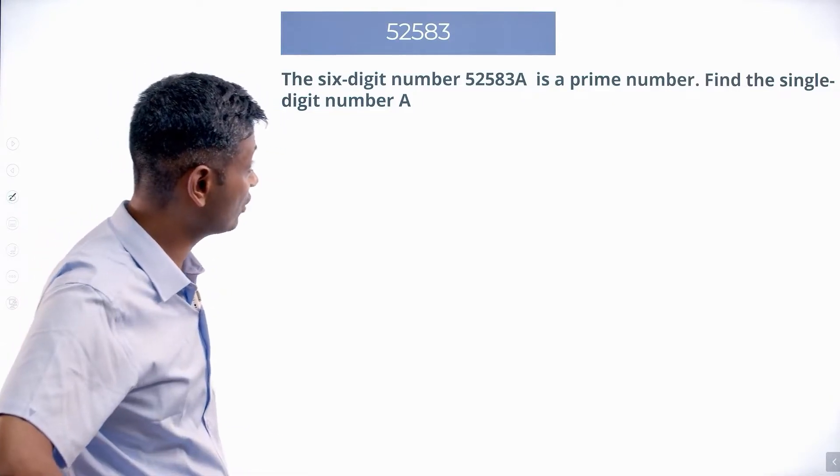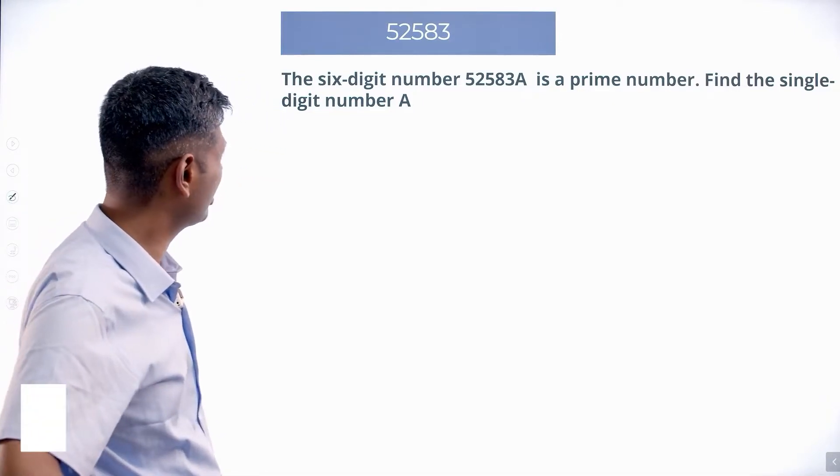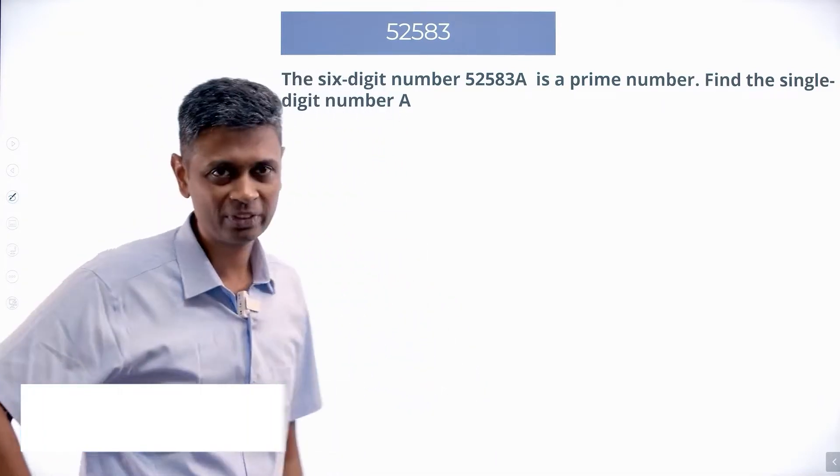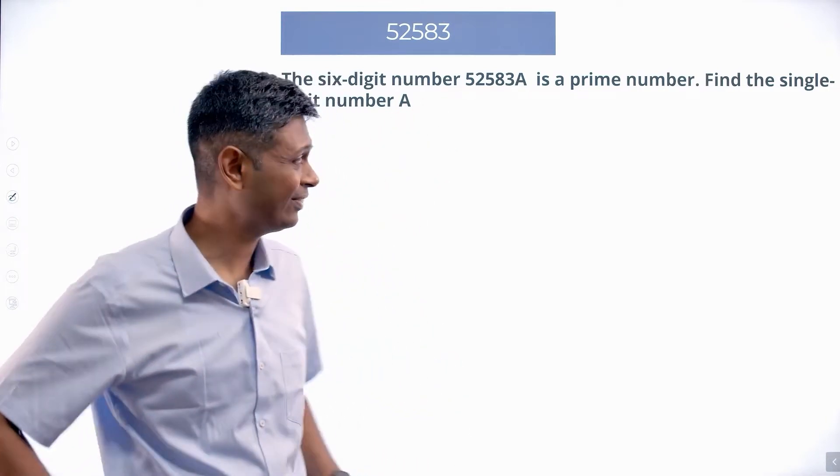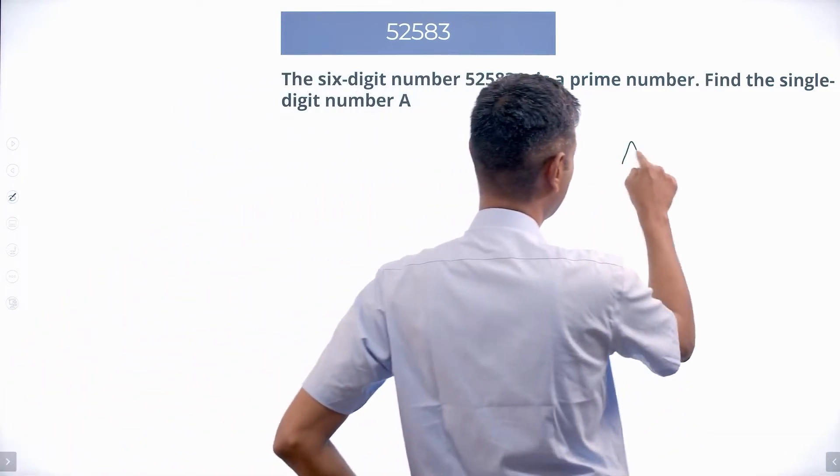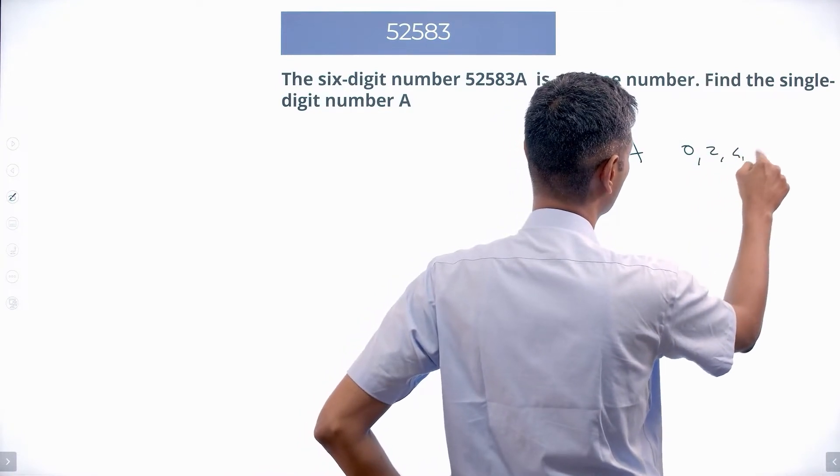Six digit number 52583A is a prime number. Find the single digit number A. Beautiful question, one of my favorite questions. Why? It's a prime number, that means it's not an even number. It's a six digit number, it's not an even number, so straight away A cannot be 0, 2, 4, 6, or